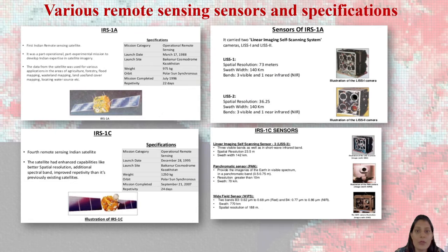Now, let's discuss in detail various remote sensing sensor specification. First of all, let us discuss IRS 1A. What is IRS 1A? Look to it. It is been developed in 1988. The weight was 975 kgs. Basically, it was the first remote sensing, Indian remote sensing, operational part, experimental mission which was been developed. Data from the satellite was used for the various applications in the area of agriculture, forest, fire, flood mapping, wasteland. This is how we get the output from why we are capturing the satellite images.